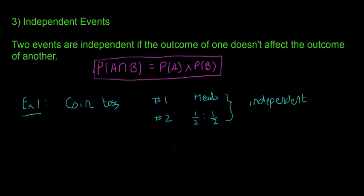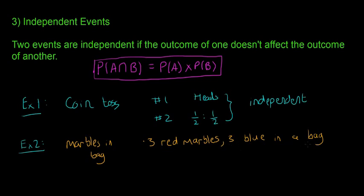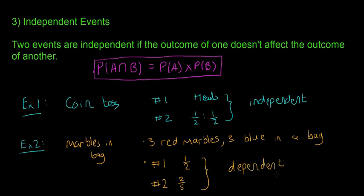Example two: marbles in a bag. There are three red marbles and three blue marbles. For event one, the probability of getting a red marble is one half. But if you take the marble out and don't replace it, then for event two the probability of getting a red marble is two over five — the probability has changed. That means it's a dependent event. The idea is: if events are independent, the probability won't change; if they're dependent, it will change.